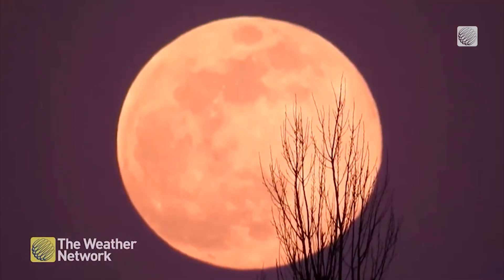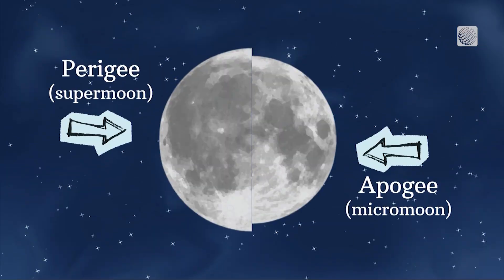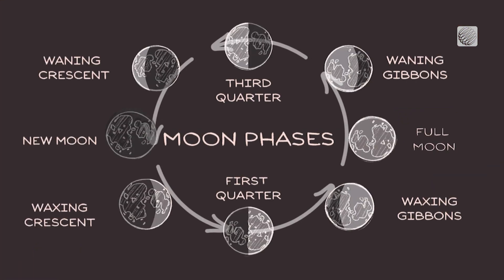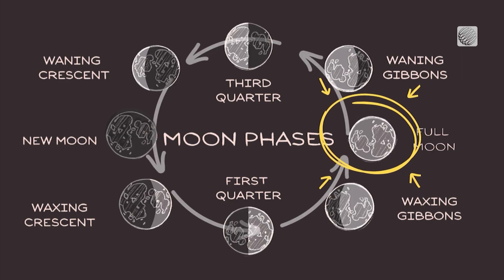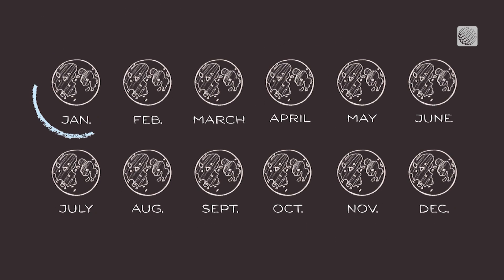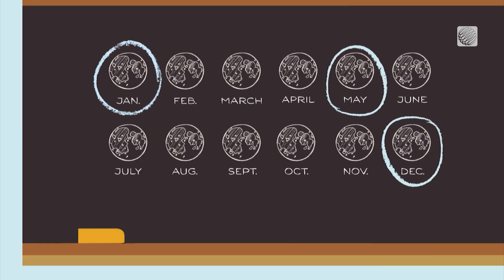What is more noticeable is that it can appear up to 30% brighter than a micromoon. Now when that occurs, and it coincides with the cycle of the moon we call a full moon, that is when we get a supermoon. And they can happen 2-5 times a year.